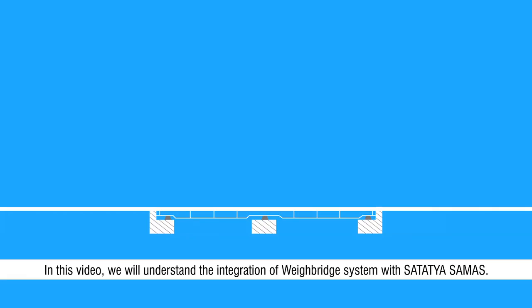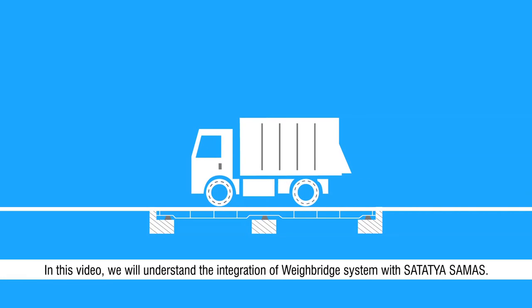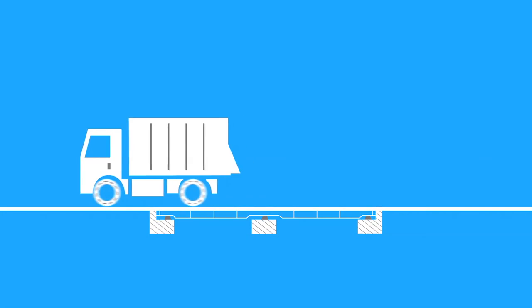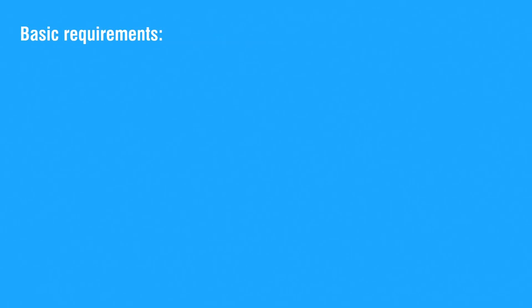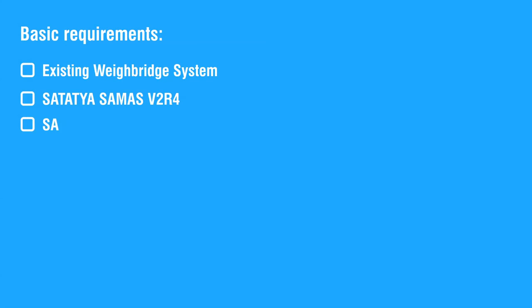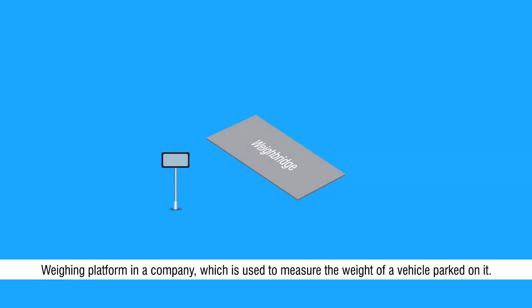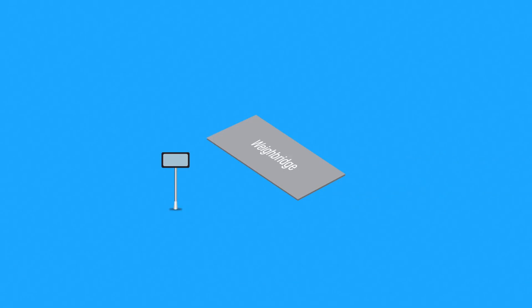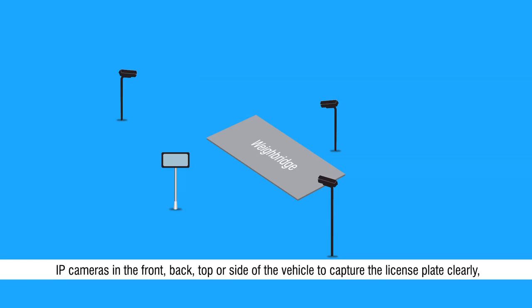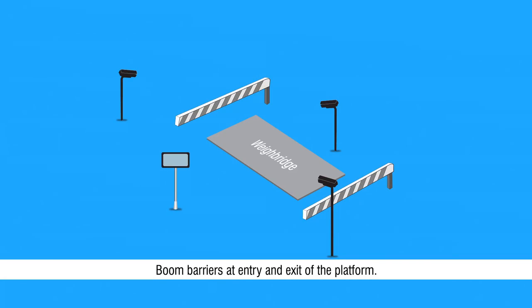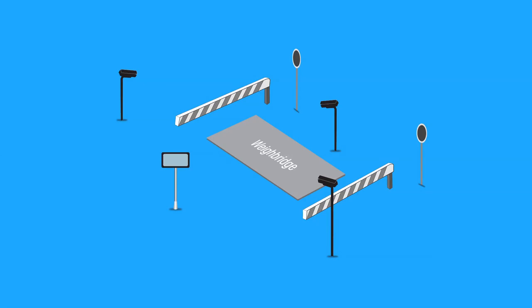In this video we will understand the integration of weighbridge system with Satatyasamas. Basic requirements are: existing weighbridge system, Satatyasamas v2r4, Satatyasamas LPR add-on license. The weighbridge system consists of a weighing platform to measure the weight of the vehicle, IP cameras at the front, back, top or side to capture the license plate, boom barriers at entry and exit of the platform, and signal lights to indicate holds and movements of the vehicle.